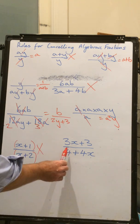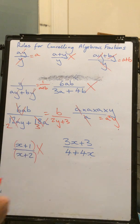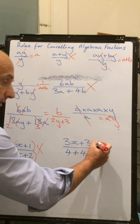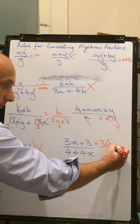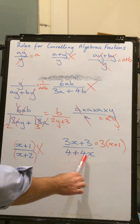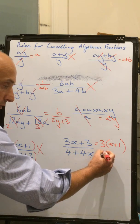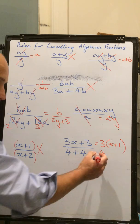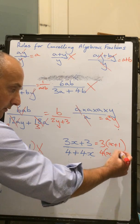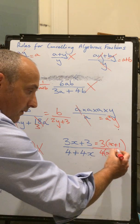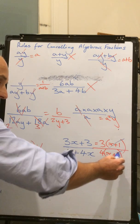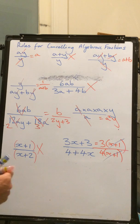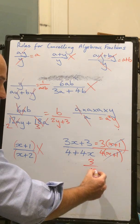This one here, 3x plus 3. And this one, 4 plus 4x. We're tempted that we cannot do anything with this. But, if we factorize, this is going to give us 3 times (x plus 1). And this one, if I rearrange these two, this is going to give me 4 times (x plus 1). Perfect. I see that these two can cancel each other out. So, my final answer to this question simplifies to 3 over 4.